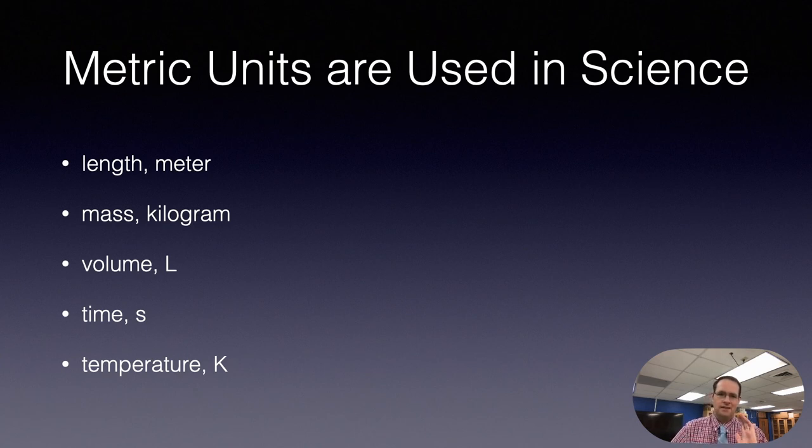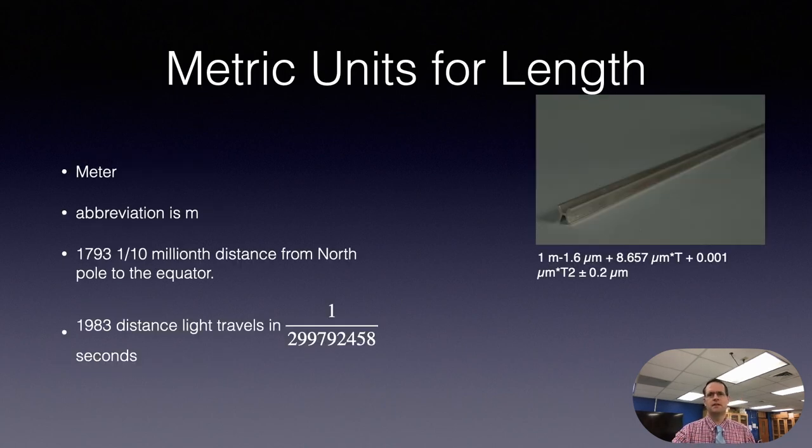Now we have basic metric system units here. For length we measure things in terms of the meter. For mass we use the kilogram as the SI unit. For volume we use a metric system called the liter, capital L. For time everybody knows that it's actually the second. And for temperature we use something called Kelvins or capital K.